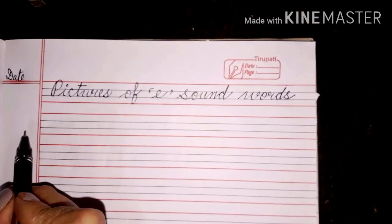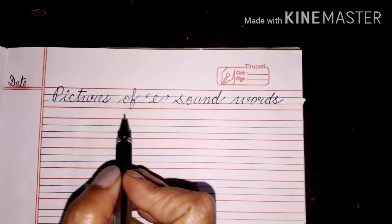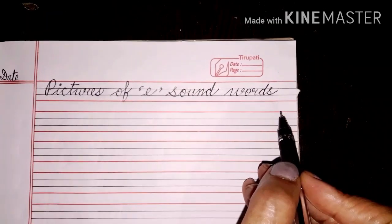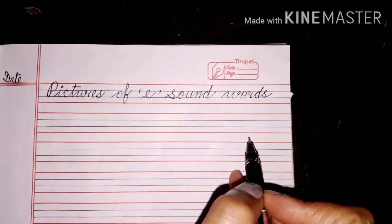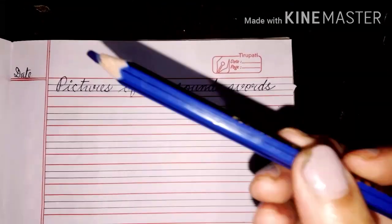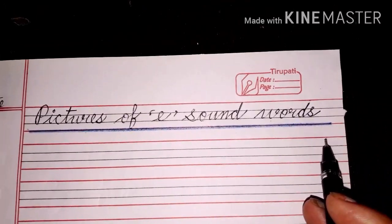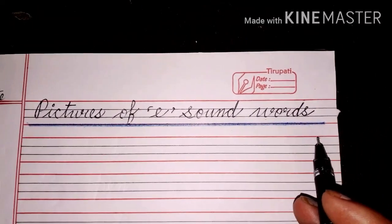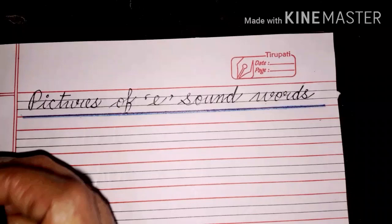So we have written today's heading pictures of E sound words. Now we will underline this heading with the blue marker pencil. See children I have drawn an underline here. Now we will start today's work.